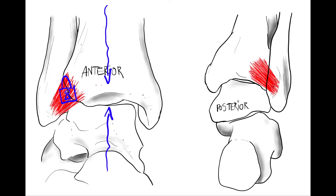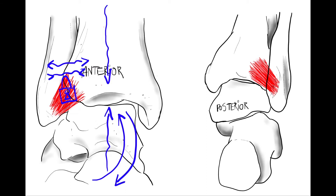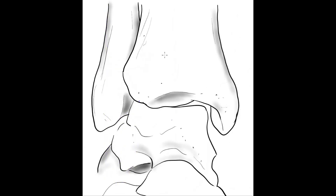The tibia and the fibula separate or come closer together depending on the movement of the talus underneath. During ankle extension or dorsal flexion, the wider anterior part of the trochlear surface of the talus fits into the tibiofibular mortise and tightens the ligaments, giving it more stability. The opposite happens during ankle flexion. Therefore, the distal tibiofibular joint works as a unit with the talocrural joint, also called the supratalar joint.